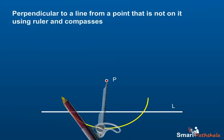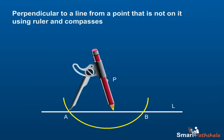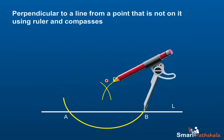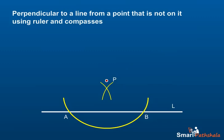Step 4: Name the two points of intersection where the arc crosses the line as A and B. Step 5: From A and B, construct two other arcs that intersect at a point immediately below the line. Let the point intersection be Q.